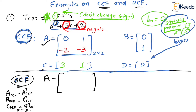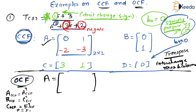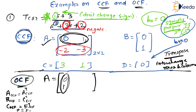The first row of A_CCF — which is [0, 1] — becomes the first column here. So the first column is [0, 1]. Similarly, the second row [−2, −3] becomes the second column. So the second column is [−2, −3]. This gives A_OCF = [[0, −2], [1, −3]].